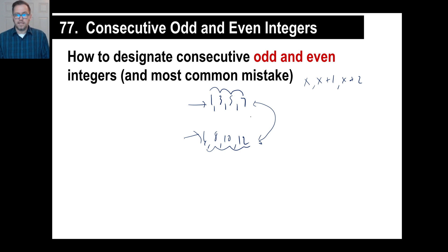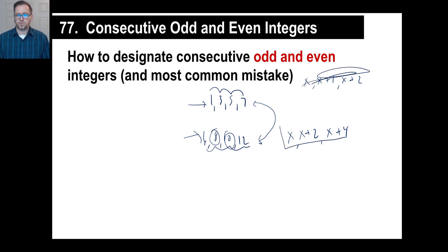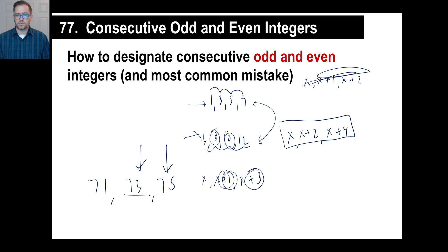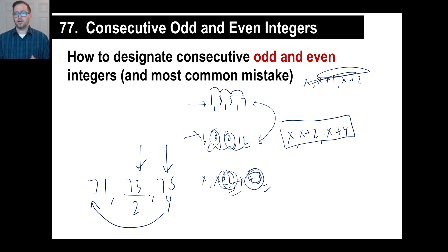If they say three consecutive even integers, there's one you don't know — x — the next one has to be two more, so x plus 2, and the next is two more than that, so x plus 4. A mistake people make is thinking: even integers, so the odds would be x plus 1 and x plus 3 because 1 and 3 are odd numbers. No. If you have an odd number like 71, the next odd integer is 73, then 75. You always use x, x plus 2, x plus 4 — no matter whether they call it odd or even.